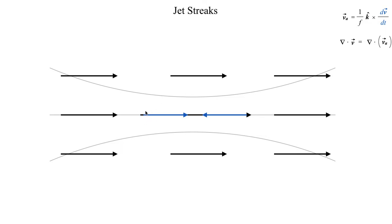Let's focus on this point right here. The acceleration vector points from west to east, and if we apply the right-hand rule, we'll get an ageostrophic wind that points from south to north, given by this green arrow. And then over here, where the acceleration vector reverses direction, I can use the right-hand rule to get an ageostrophic wind vector that points from north to south. And again, since I have negligible acceleration at the outer points, I basically have a negligible ageostrophic component there — relatively small compared to the ageostrophic winds given by the green arrows here.